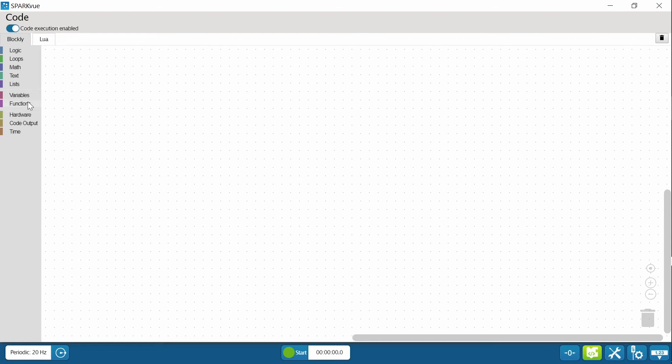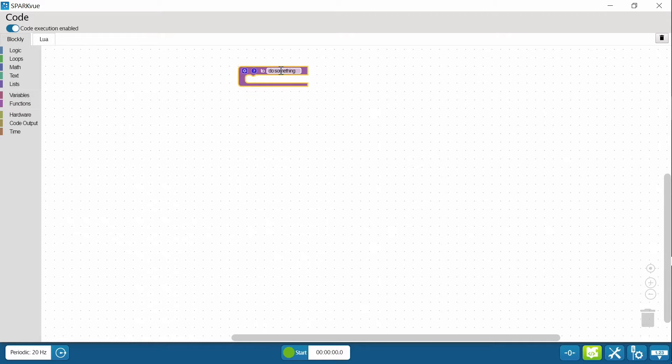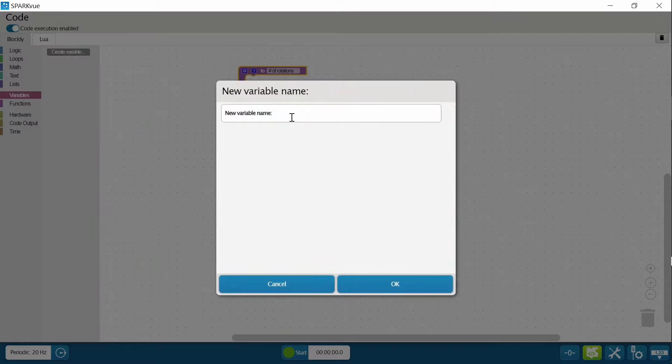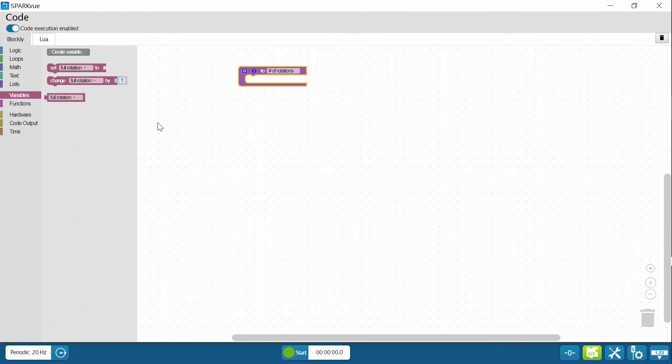Then just go down to the code icon and let's start building your function. So I'm going to go here to the functions tab and pull the top one out and I'm going to name that number of rotations. I'm putting spaces into my program here. You may not do that. Either way your program will work. Then I need to create a variable. Click on that and I'm going to name this full rotation.